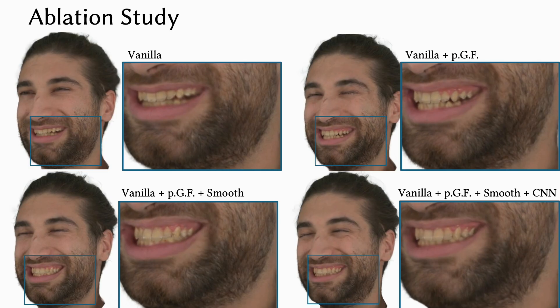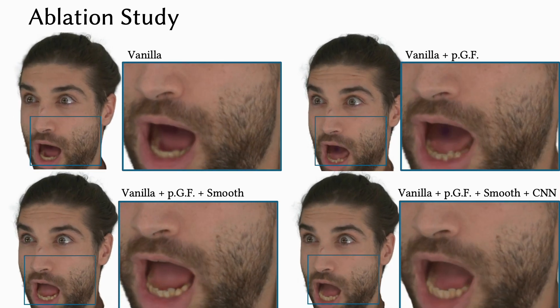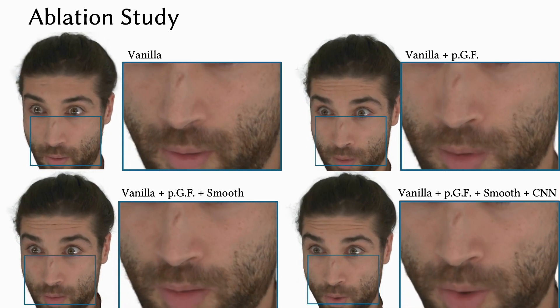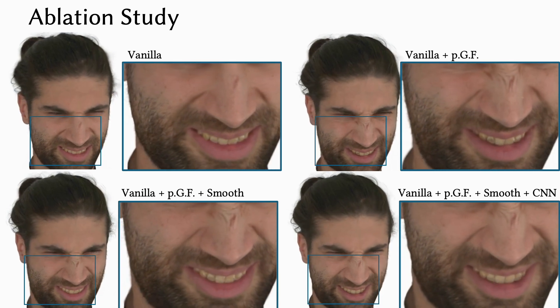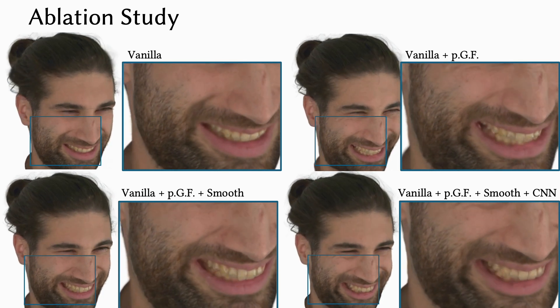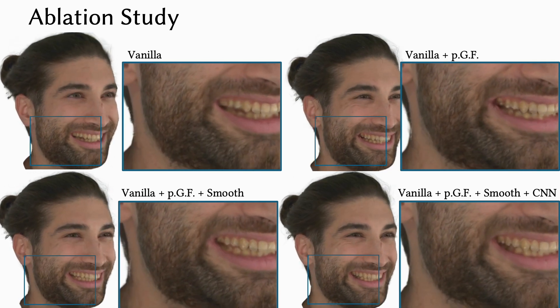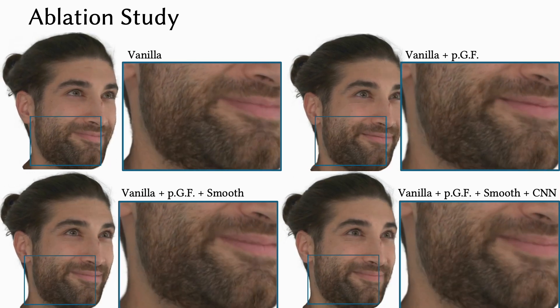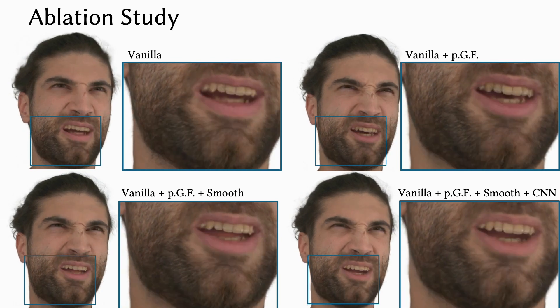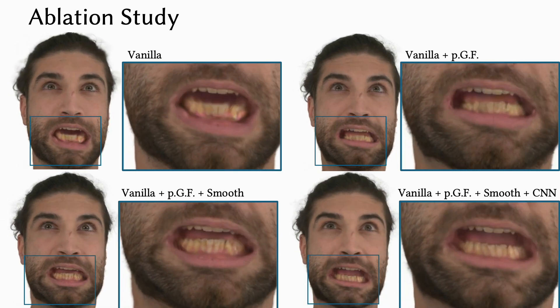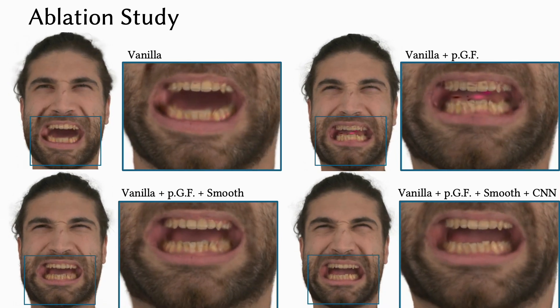In an ablation study, we show that per-Gaussian features help to obtain sharp avatars but result in artifacts under extreme expressions. Our proposed Laplacian smoothness, as well as a screenspace CNN, help to eliminate such artifacts.